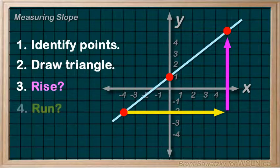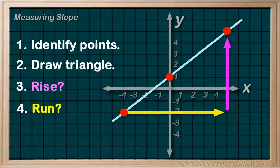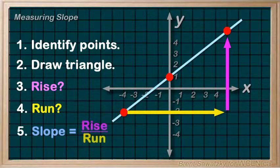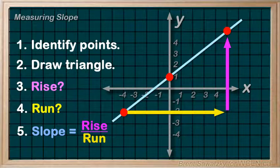In much the same way, we would determine the run. Again, by counting blocks, or by subtracting the x values. That is, the x of the second point, minus the x of the first point. And finally, we represent the ratio of the rise and run as a division, or fraction. And then reduce, if possible.